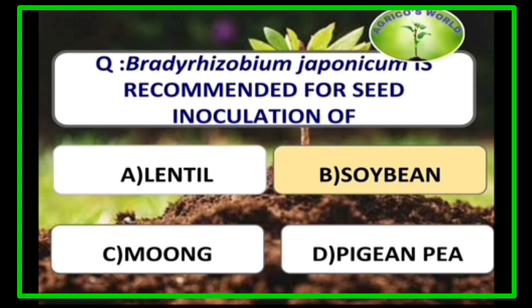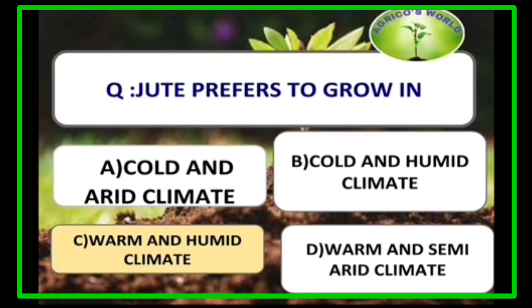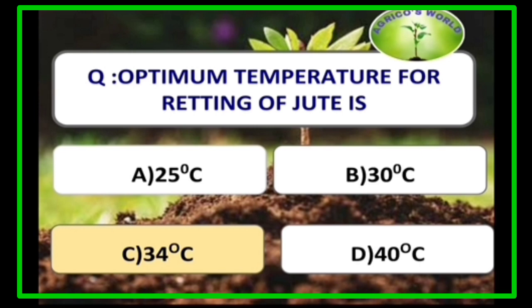Bradyrhizobium japonicum is recommended for seed inoculation of soybean. Jute prefers to grow in a warm and humid climate. The optimum temperature for retting of jute is 34 degrees Celsius. Retting means extraction of fiber from jute; it is actually a microbial decomposition.